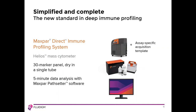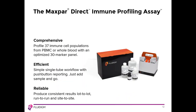The second part of the system is the Maxpar Direct Immune Profiling Assay, which has multiple advantages. It is comprehensive, with the ability to profile 37 immune cell populations in a single tube with a dry 30-marker panel. The assay is also efficient and easy to use — the single tube with its optimized dry panel minimizes assay design and validation time while maximizing the information for PBMC and whole blood samples. You just add your sample and go. The assay is also reliable, with rigorous product QC and testing that provides trusted results lot-to-lot, run-to-run, and site-to-site.